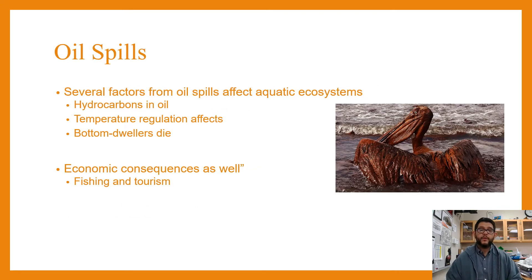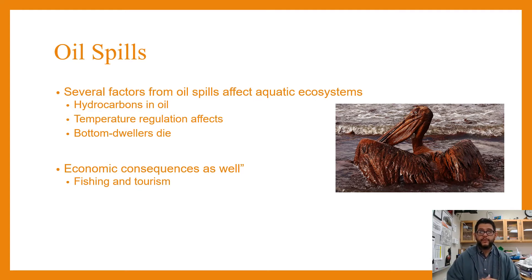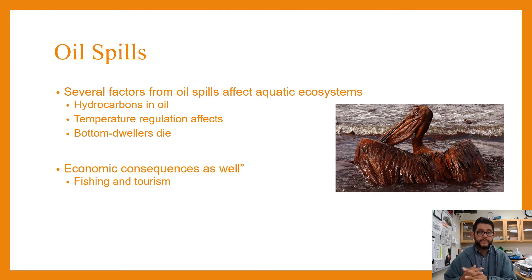A good example of this is an oil spill. Oil spills can affect different aquatic ecosystems. You get hydrocarbons in the oil, and when an animal like a pelican is covered in oil, their temperature regulation gets affected. The species on the bottom are also going to be clouded out and die. Make sure you understand the ecosystem portion, but also understand there's an economic consequence to this.